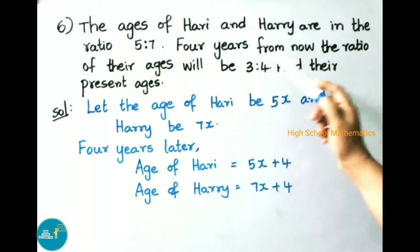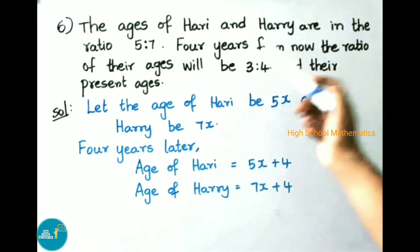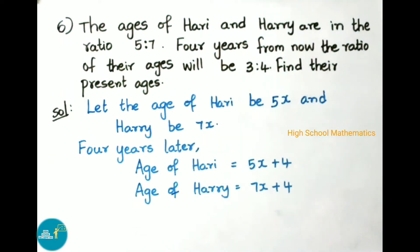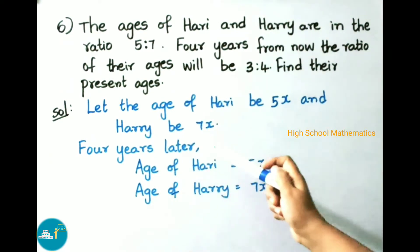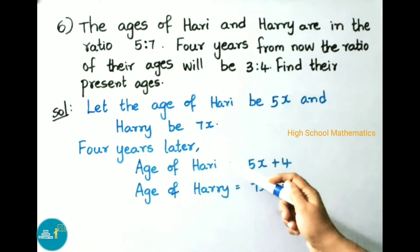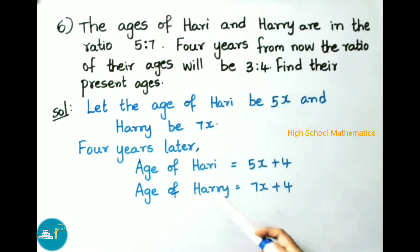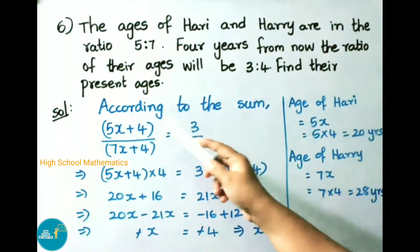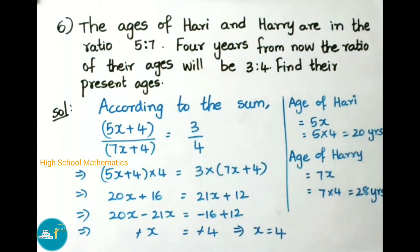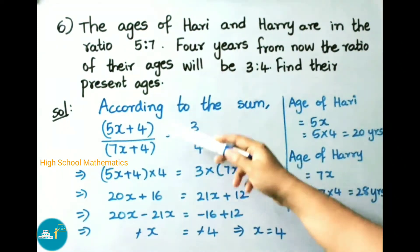See now question number 6: The ages of Hari and Harry are in the ratio 5:7. Four years from now, the ratio of their ages will be 3:4. Find their present ages. Let the age of Hari be 5x and Harry be 7x. Four years later, age of Hari will be 5x + 4 and age of Harry will be 7x + 4. According to the sum, (5x + 4) / (7x + 4) = 3/4, since four years later their ages will be in the ratio 3:4.